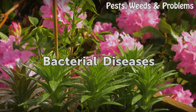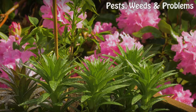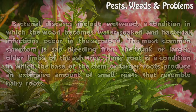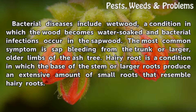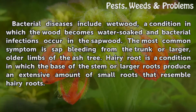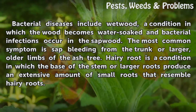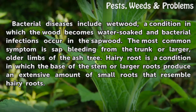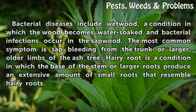Bacterial Diseases. Bacterial diseases include wet wood, a condition in which the wood becomes water-soaked and bacterial infections occur in the sapwood. The most common symptom is sap bleeding from the trunk or larger, older limbs of the Ash tree. Hairy root is a condition in which the base of the stem or larger roots produce an extensive amount of small roots that resemble hairy roots.